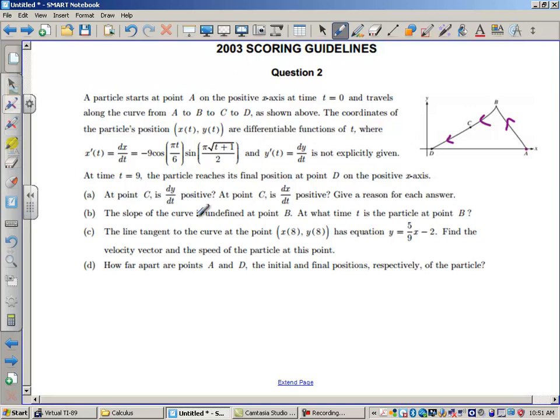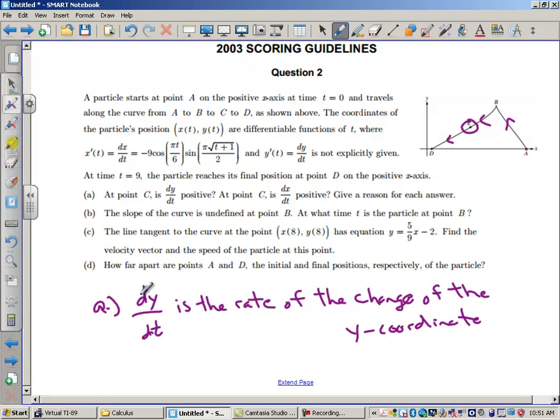So here we go. At point C is dy dt positive? Here is point C. So let's take a look at the movement. What does dy dt mean? dy dt is the rate of change of the y-coordinate. Any derivative will tell you whether something is increasing or if it's decreasing. So when you answer this question, you're just going to have to ask yourself, is dy dt positive? That would mean at point C, my y-coordinate would have to be increasing. If dy dt is negative, my y-coordinate would be decreasing.